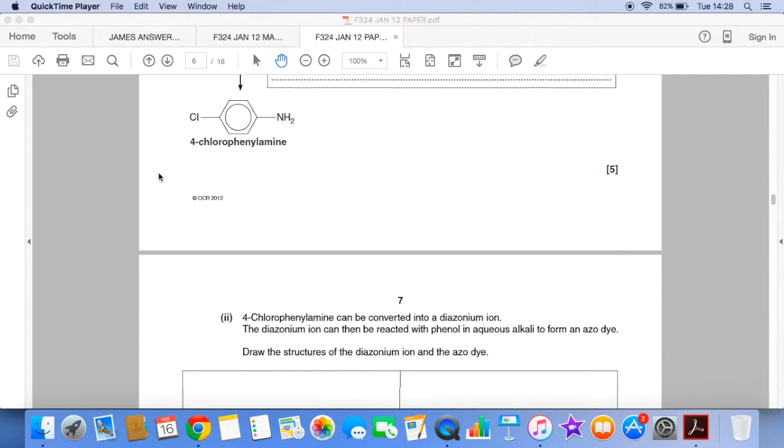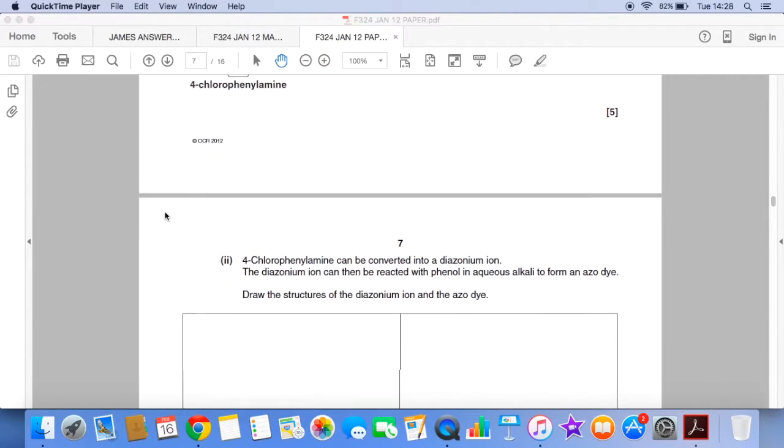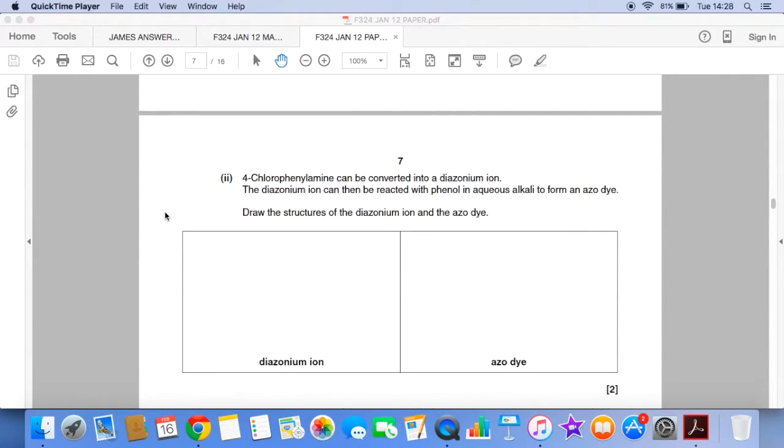The next part of the question then takes the product of the first part, 4-chlorophenylamine, and asks about how it can be converted into a diazonium ion and the structures of the diazonium ion and the azo dye that could form. And it does specify that phenol is involved.